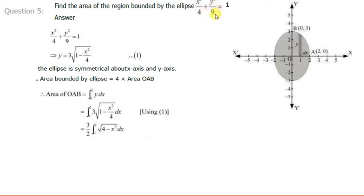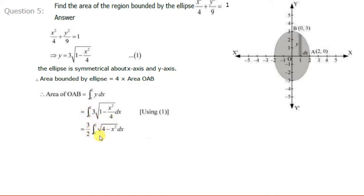From the ellipse equation, y²/9 = 1 − x²/4, so y² = 9(1 − x²/4). Therefore y = 3√(1 − x²/4). Taking 4 into the numerator under the root, we get y = (3/2)√(4 − x²). So the integral becomes (3/2) ∫₀² √(4 − x²) dx.